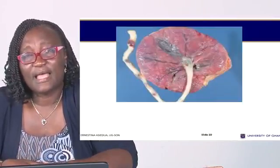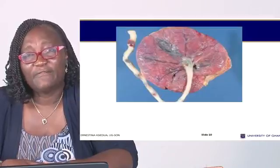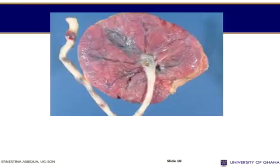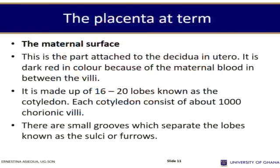This is the placenta — you can find the insertion of the cord in the middle, the surface being shiny, and the blood vessels radiating from the umbilical cord on the surface of the placenta.